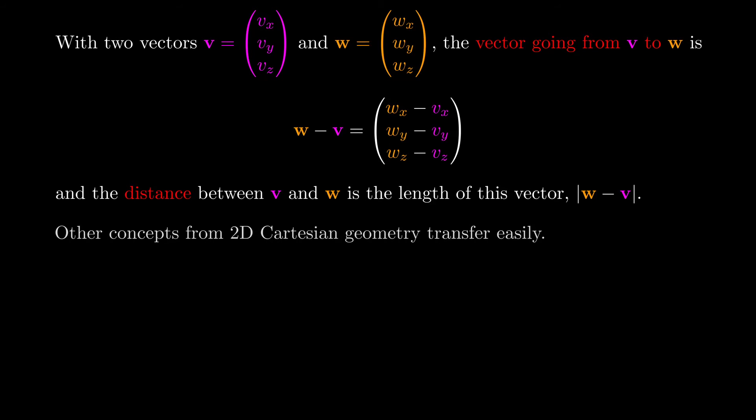So other concepts from 2D geometry, as we said before, transfer easily as well. For example, a midpoint is just averaging the x values and y values and z values. There's just three of them now, but it's the same thing. And that will be a theme we see quite often throughout this topic.